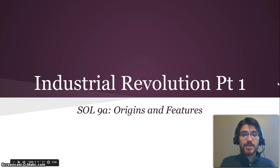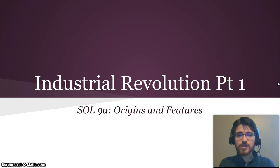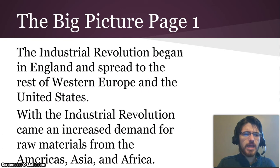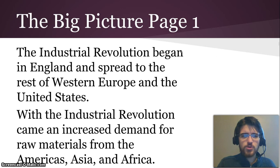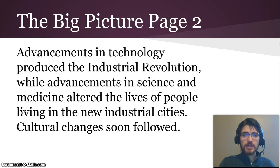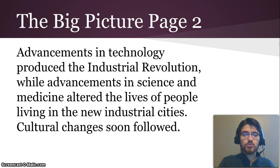Hello and welcome to this first video in the Industrial Revolution section of our year. This is part one: the origins and features of this revolution. The Industrial Revolution began in England and it spread to the rest of Western Europe and the United States. With the Industrial Revolution came an increased demand for raw materials from Africa, Asia, and the Americas. Advancements in technology produced the Industrial Revolution, while advancements in science and medicine altered the lives of people living in the new industrial cities. And cultural changes soon followed.